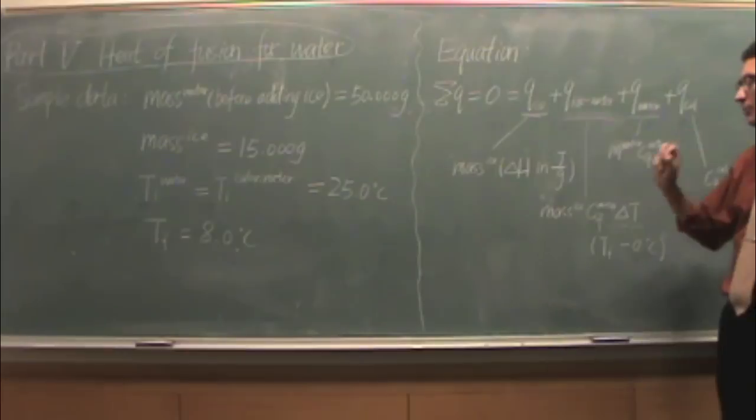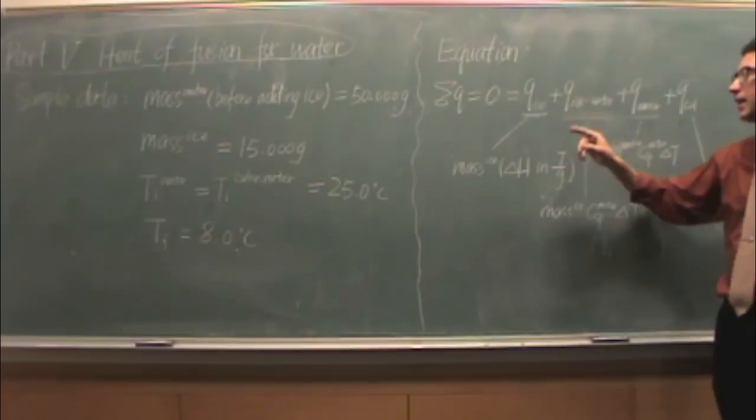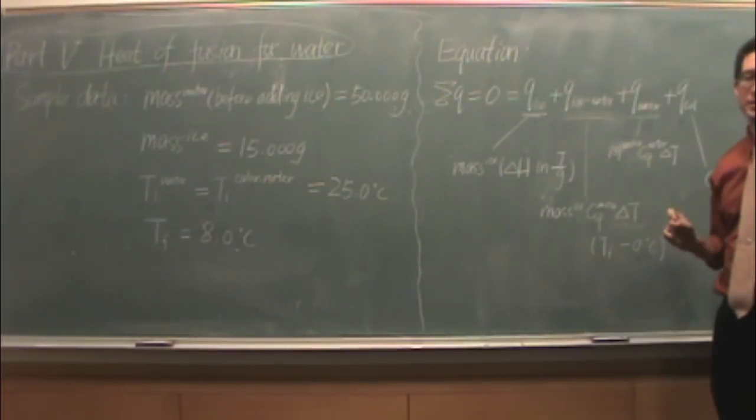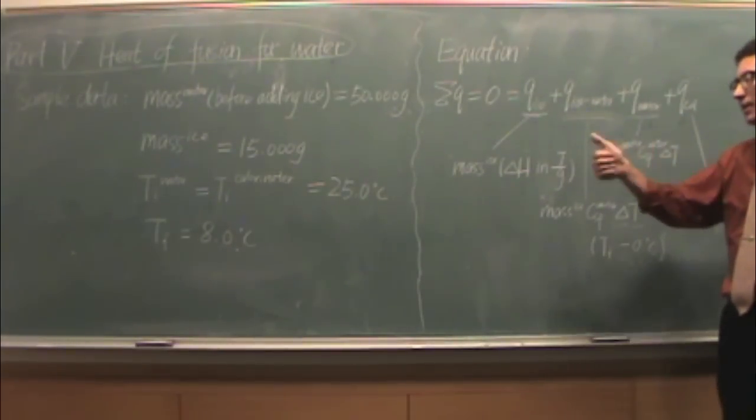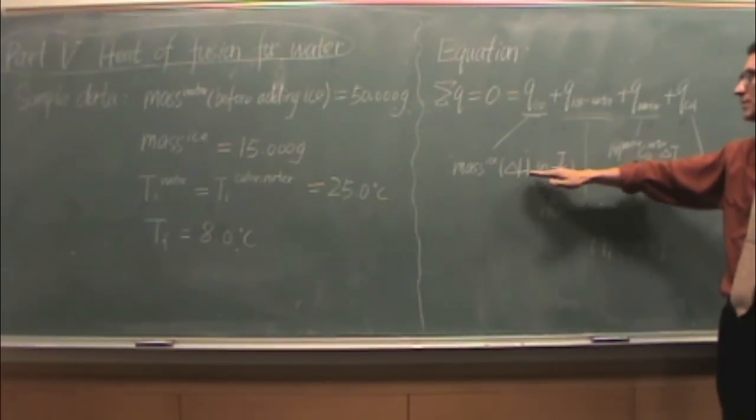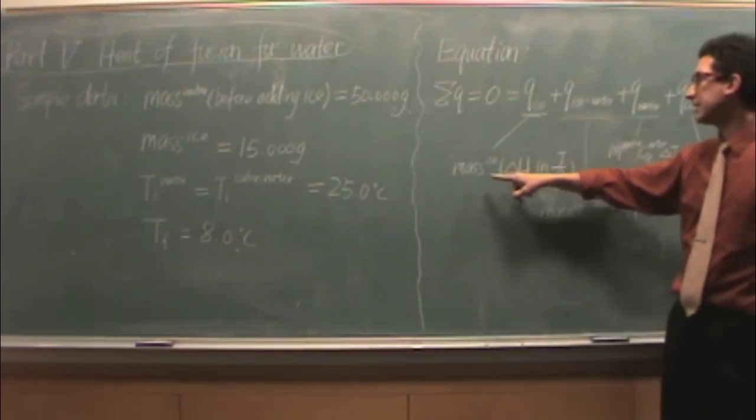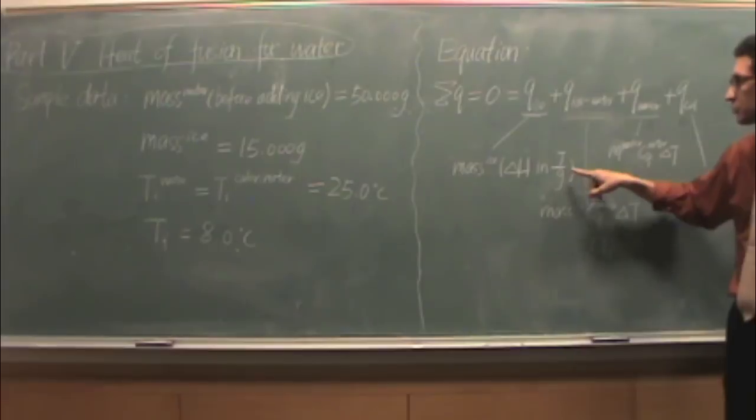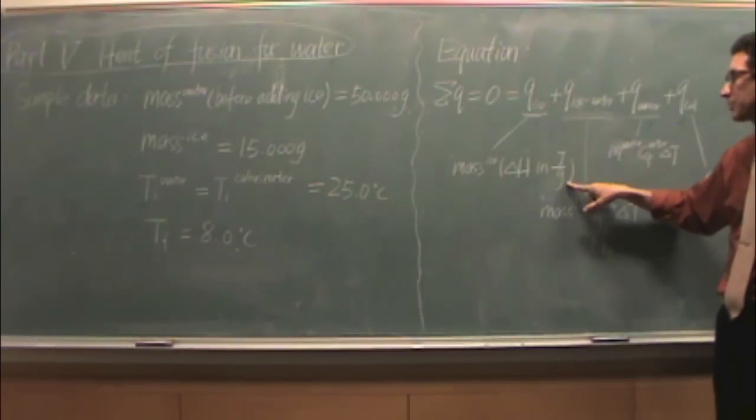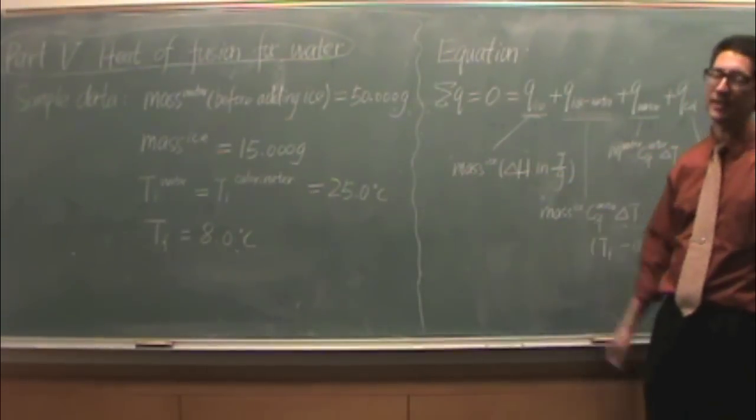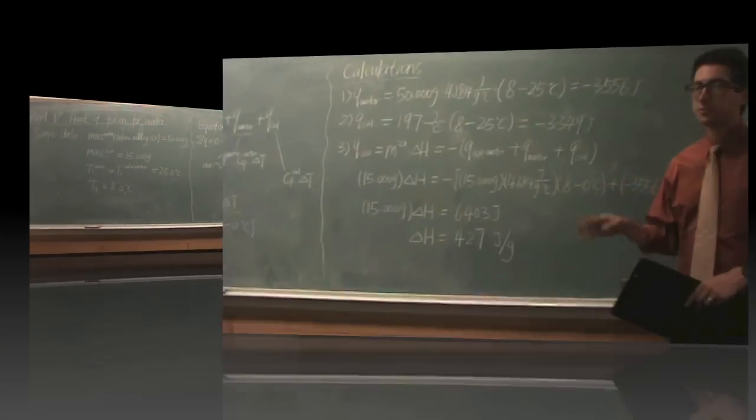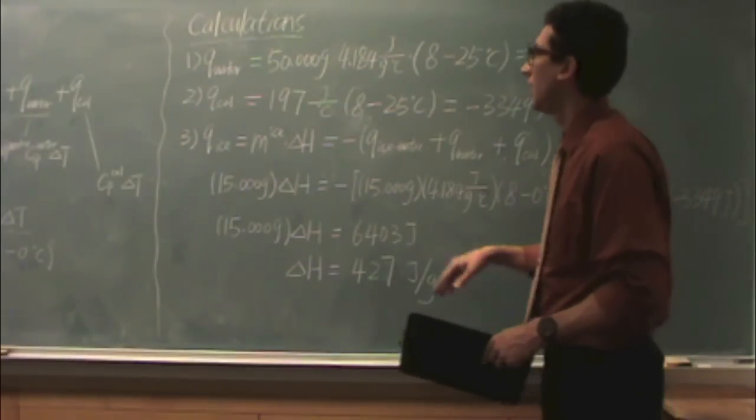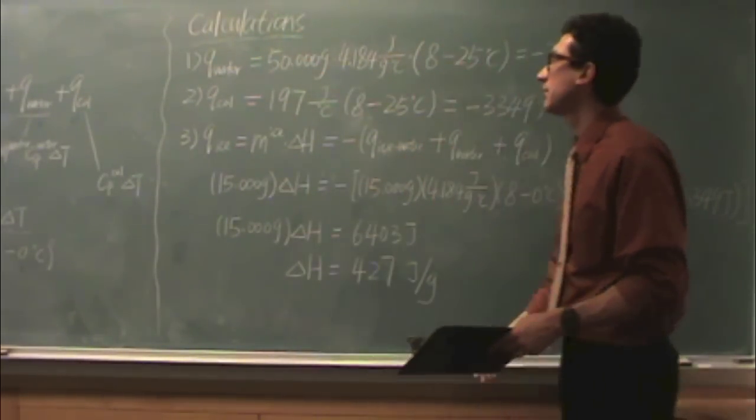In here, part five, this enthalpy change comes from a phase change. So, enthalpy changes, two common areas, you'll see them appear. Phase change and reaction. Okay? This is an example of a phase change. Whenever you have a phase change, you need a Q. And in this case, we're going to be dealing with mass because they want the delta H in joules per gram. Because they want joules per gram, you're going to have a multiplier in front, which is the mass of ice that you added. So, there's really four parts to this calculation.